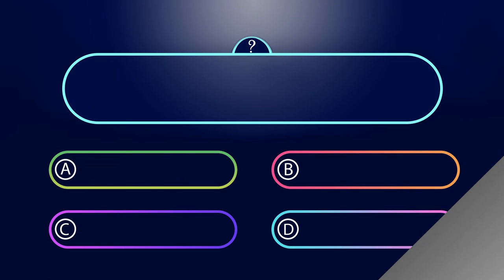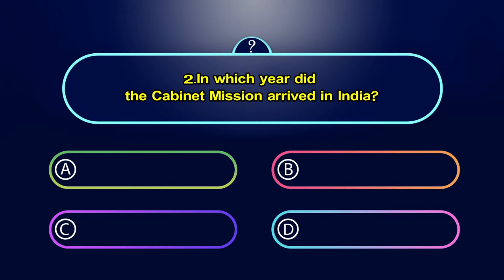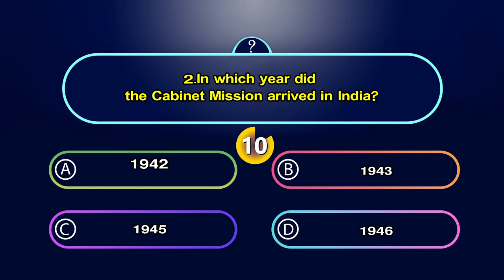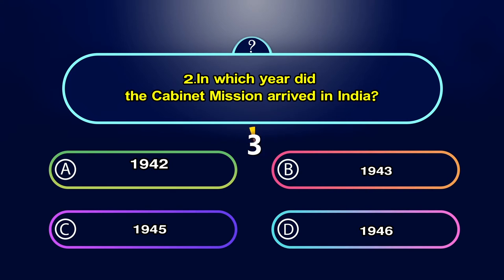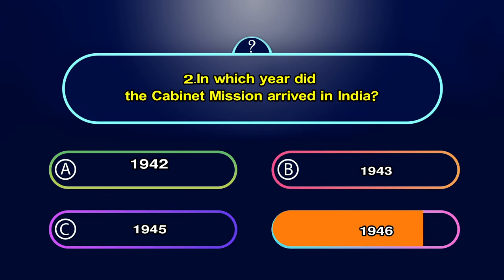In which year did the Cabinet Mission arrive in India? Option A. 1942, Option B. 1943, Option C. 1945, Option D. 1946. Your time starts now. The answer is D.